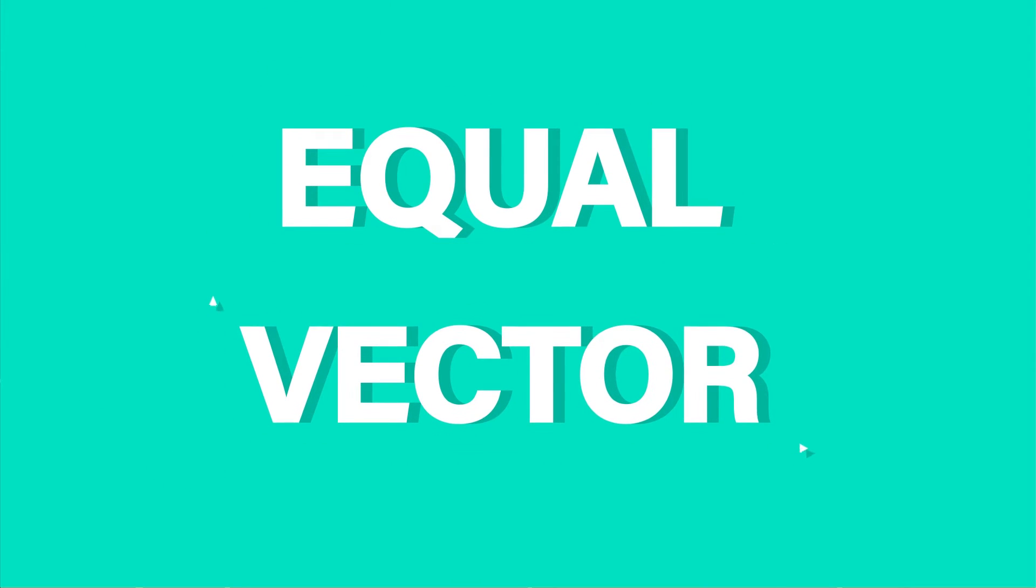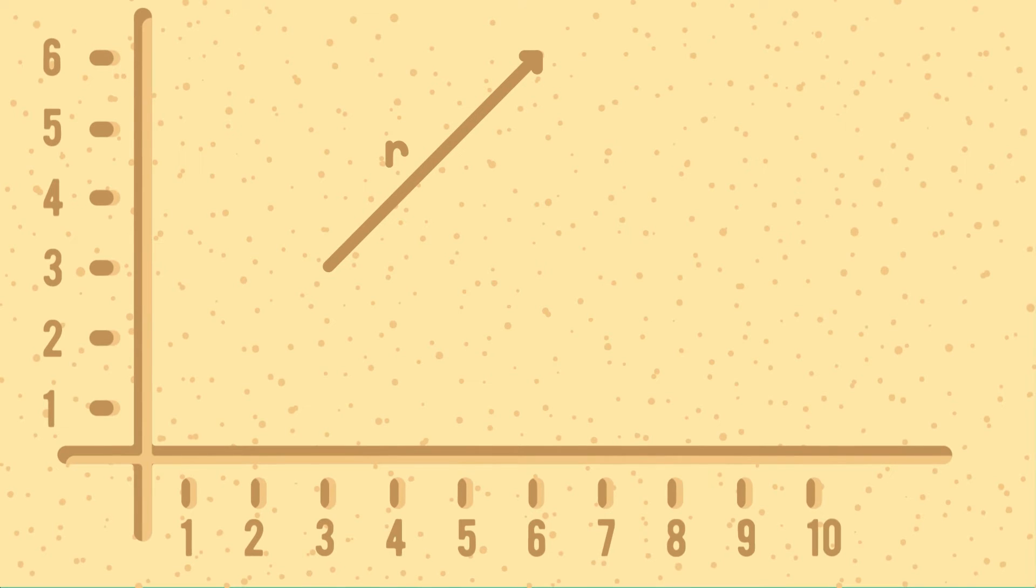Equal vectors. Two vectors having same directions, magnitude and unit, are called equal vectors.